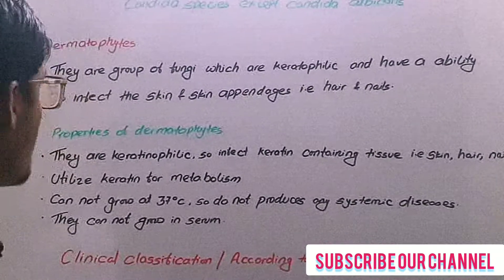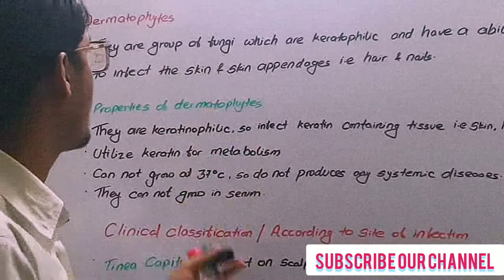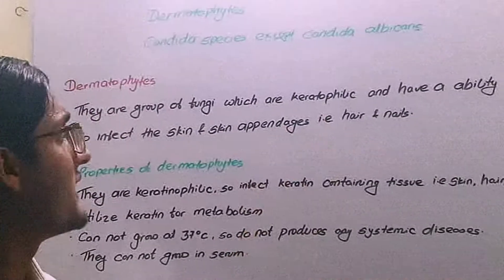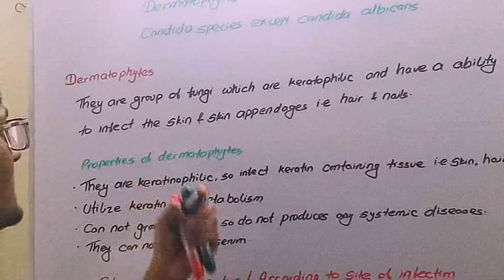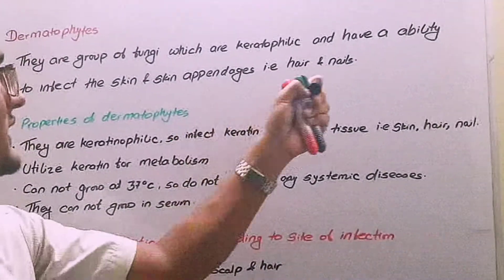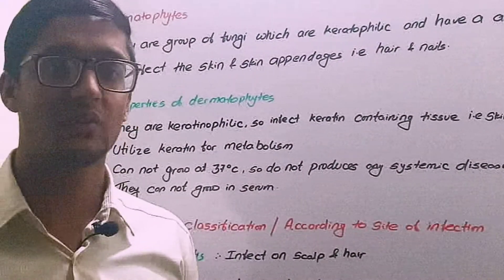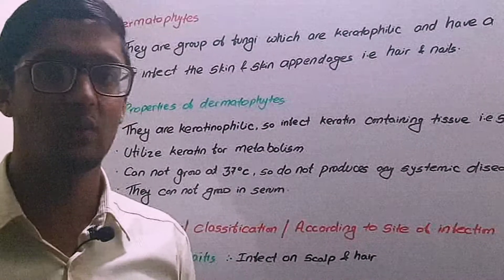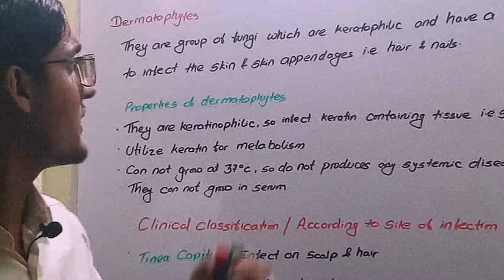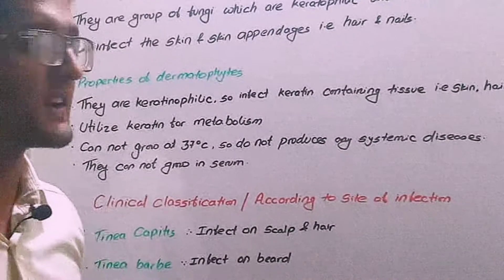Definition of dermatophytes: dermatophytes are the group of fungi which are keratrophilic and have the ability to infect the skin and skin appendages like hair, nails and skin. In simple language, dermatophytes are the agents which infect body structures where there is presence of keratin.